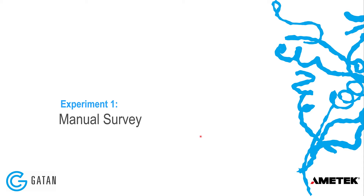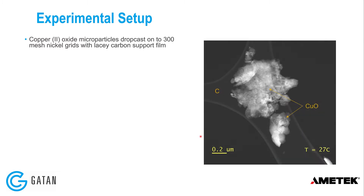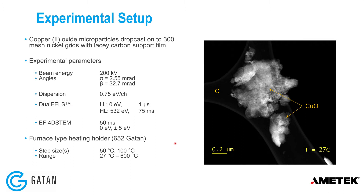The first experiment is a manual survey, looking at copper oxide particles drop-cast onto 300 mesh nickel grids with lacey carbon support film. All data was acquired at 200 kV with a fairly small convergence angle — acquiring dual EELS and energy-filtered 4D STEM. The furnace heating holder was used with a coarse step size of 50 or 100 degrees Celsius, from room temperature up to 600 Celsius.